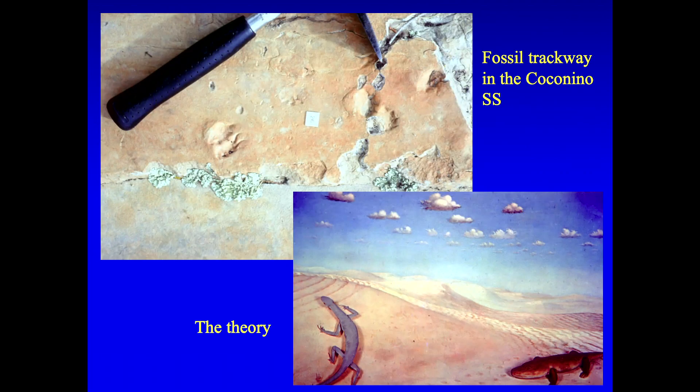The only fossils you find in Coconino are these trackways. The top picture shows a very nice trackway. You can see several footprints with toe marks on the front. And the bottom is the theory of how this formed. Animals are walking in the desert, and they leave these tracks.